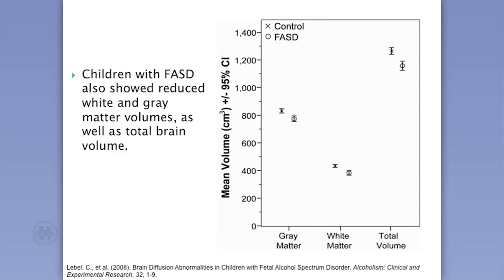This type of imaging also gives you overall brain volume. We found reductions in gray matter, white matter, and total brain volume in FASD compared to controls. When we analyze the integrity of the tracks, we control for overall brain size, and the tracks still show abnormalities even after accounting for that.